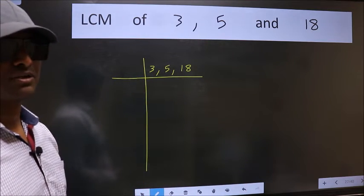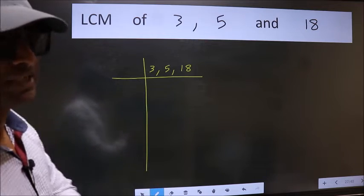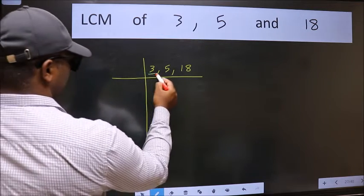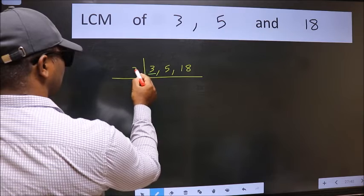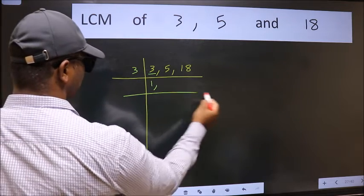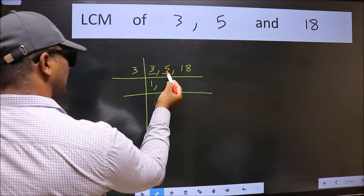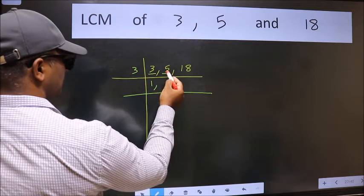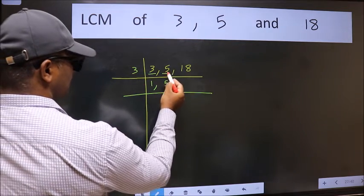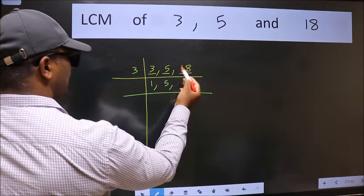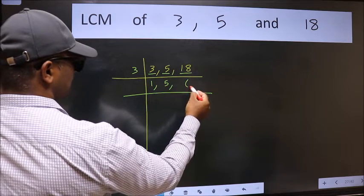Now we should focus on the first number which is 3 here. 3 is the prime number so 3 wants 3. The other number 5 is not divisible by 3 so we write it down as it is. The other number 18, when do we get 18 in 3 table? 3, 6, 18.